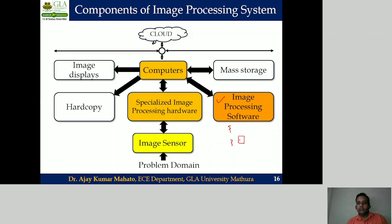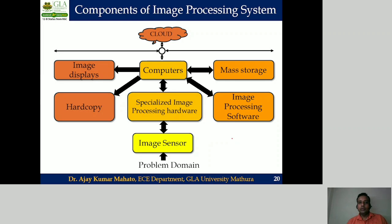The output image can be stored in a mass storage device like a computer hard disk or pen drive. The processed output image can be displayed on a wide-screen TV or a projector. A hard copy of the processed output image can be generated using a printer. The processed output image can also be shared with a client or with the competent authority via a cloud network.